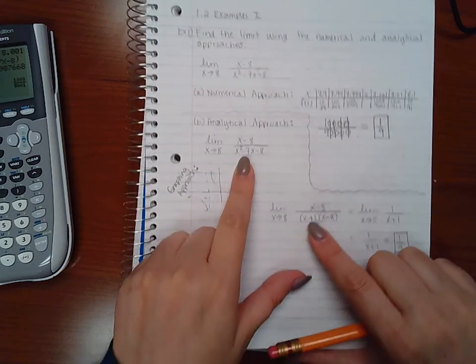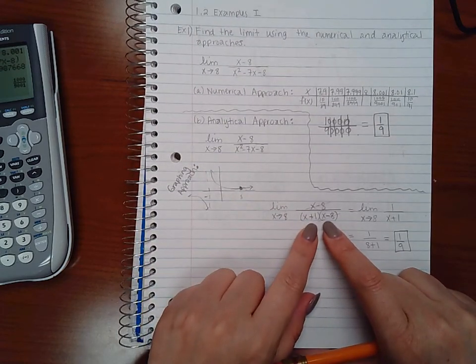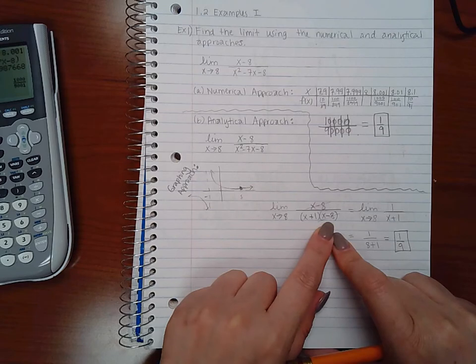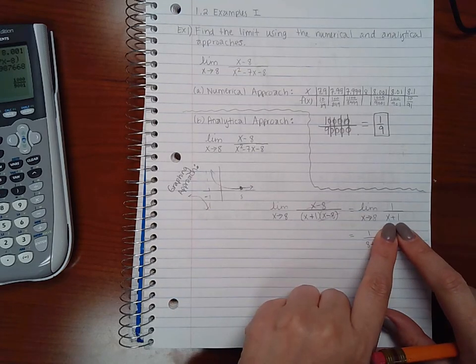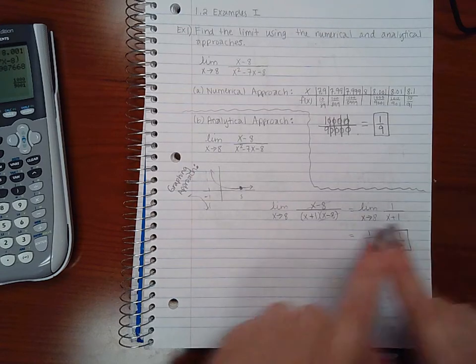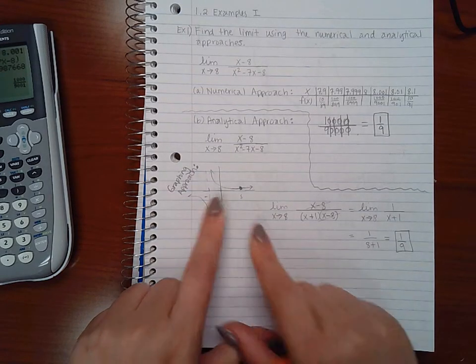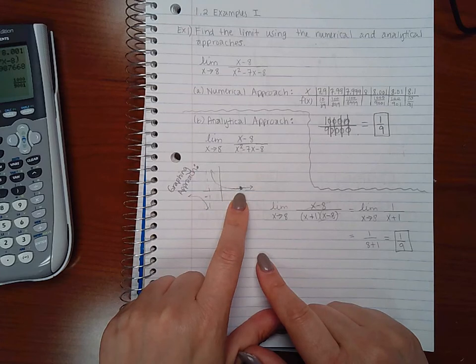So if I reduce it, I'm going to factor the denominator. The (x - 8) factors will reduce and cancel, and I'll end up with 1 over (x + 1), which has this same graph but now there's no longer a hole, it's filled in with a dot.